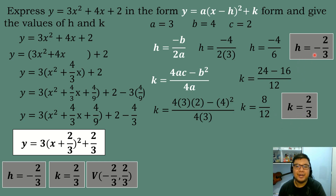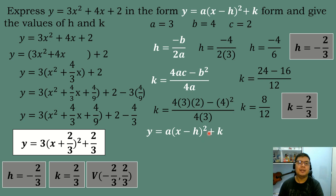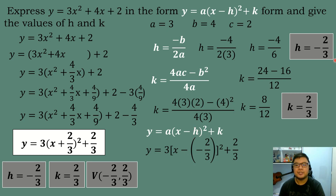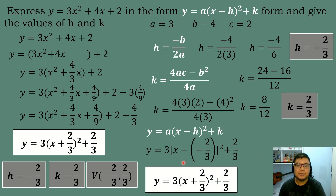So we have arrived at the same answer: h = −2/3 and k = 2/3. To get the vertex form, substitute into y = a(x − h)² + k. With a = 3 and h = −2/3: y = 3 × (x − (−2/3))² + 2/3. Simplifying, negative times negative gives positive 2/3, so the vertex form is y = 3(x + 2/3)² + 2/3.